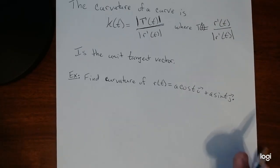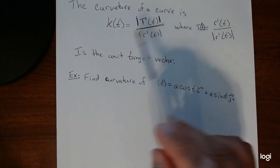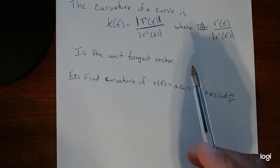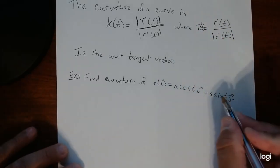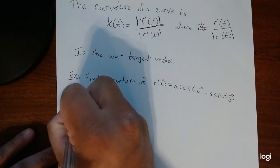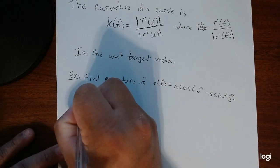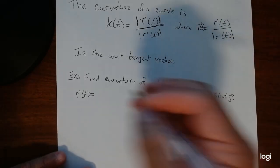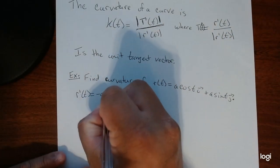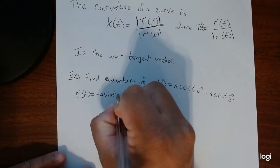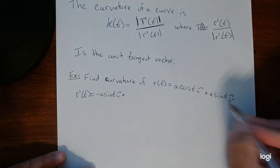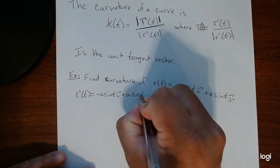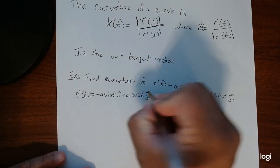Let's do an example so you can see how this comes into play. This is fairly involved because there are multiple parts, so we'll break it out in each individual case. Here's our r(t), so we're going to write a couple things down. First we're going to find the derivative of r. The derivative of cosine is negative sine, and the derivative of sine is positive cosine.